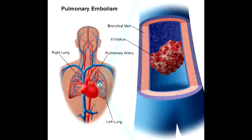How can fat emboli form? A fat embolus can form after long bone fractures and after a liposuction procedure. What is the classic triad observed with fat embolism? The classic triad of fat embolism includes hypoxemia, neurologic abnormalities, and petechial rash.